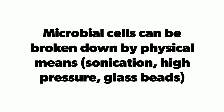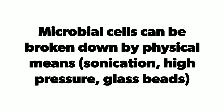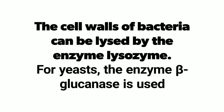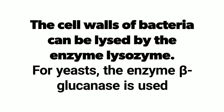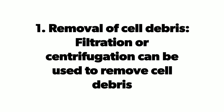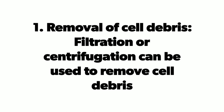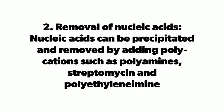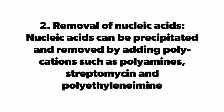Microbial cells can be broken down by physical means such as sonication, high pressure, and glass beads. The cell wall of bacteria can be lysed by the enzyme lysozyme, and for yeast, the enzyme beta-glucanase is used. The most important consideration is to minimize loss of desired enzyme activity. Cell debris can be removed by filtration or centrifugation. Nucleic acids can be precipitated and removed by adding polycations such as polyamines, streptomycin, and polyethylene amine.